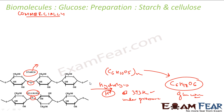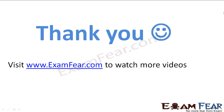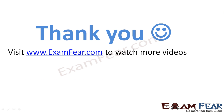In summary, the commercially used method to prepare glucose is from starch and cellulose. We will talk more about starch and cellulose in the next few slides. Visit examphia.com to watch more videos, attempt free online tests, get study materials, and find tutors and mentors.